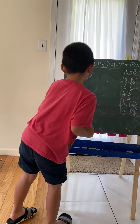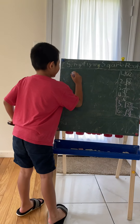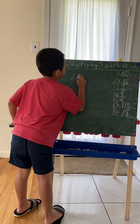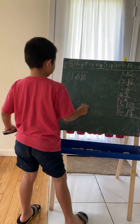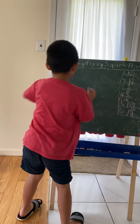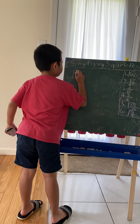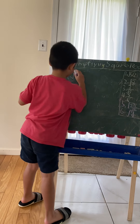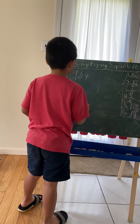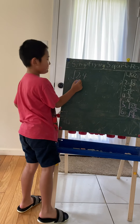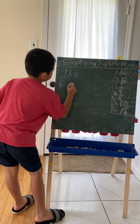Since 32 can be factored into 2 times 16, and 16 is already a perfect square, we can break it out into the square root of 2 times 4. The square root of 2 can't be simplified, so we have 4 root 2.